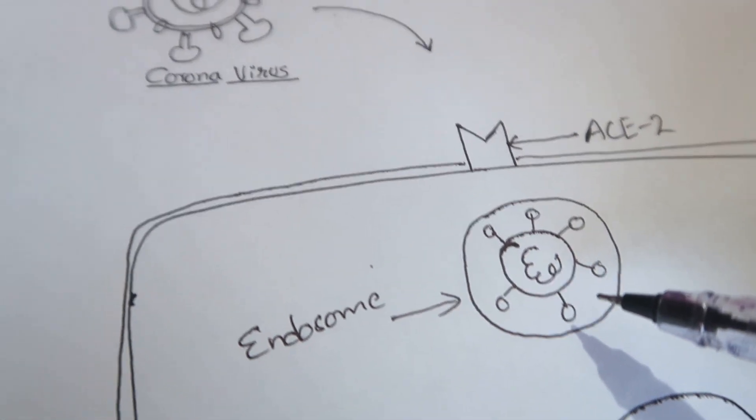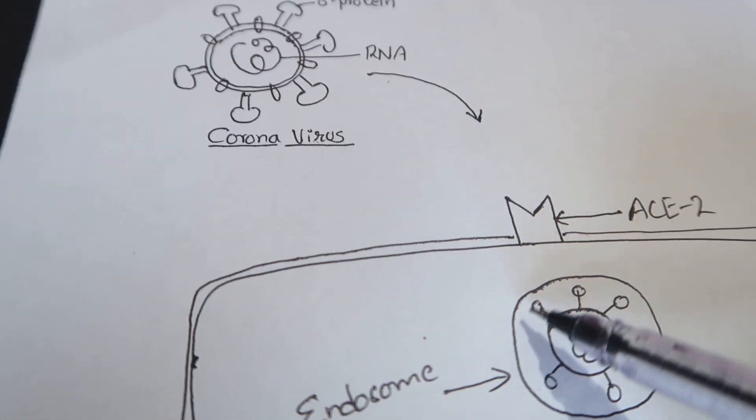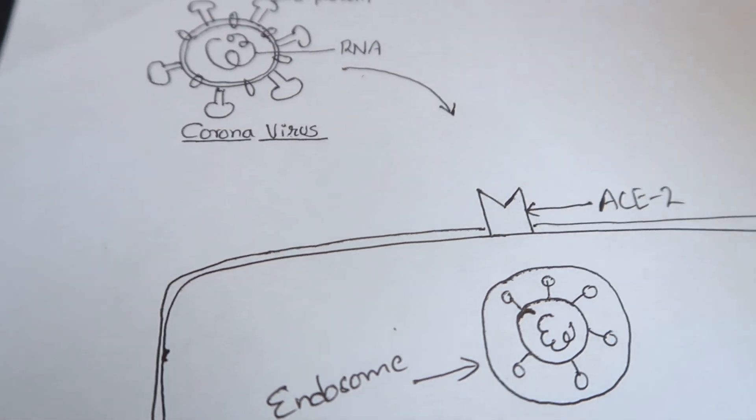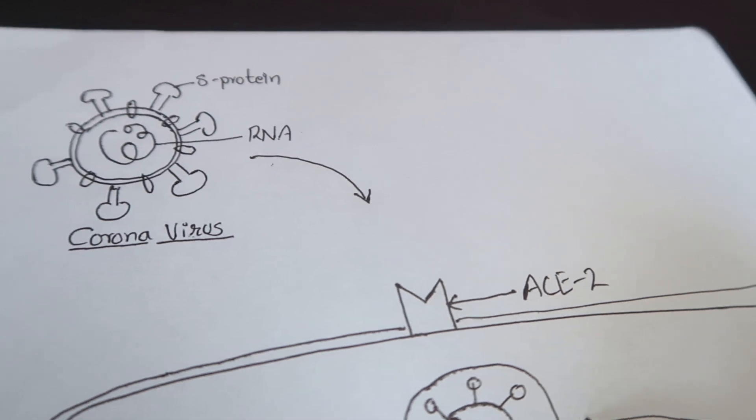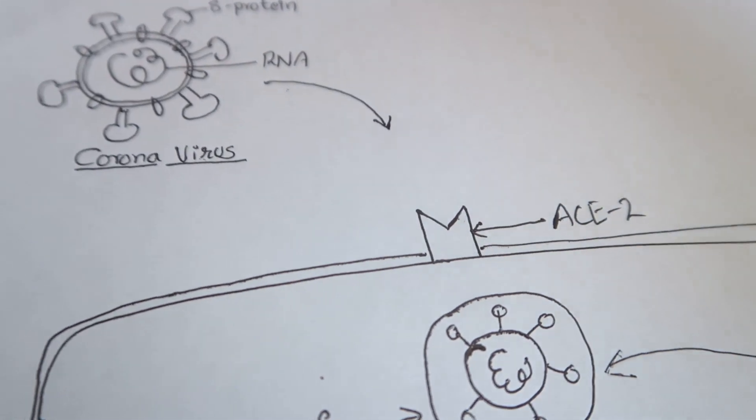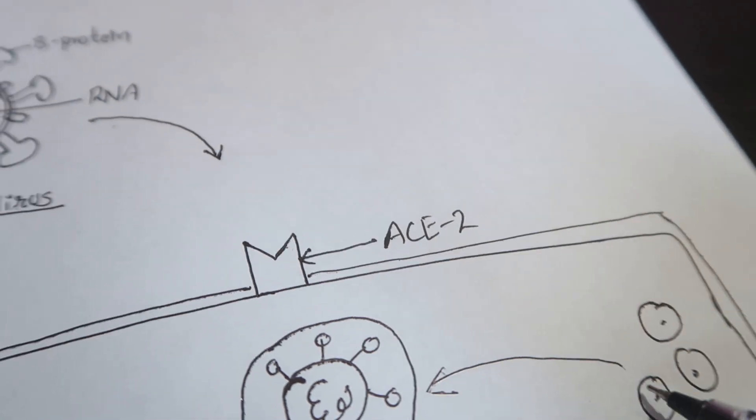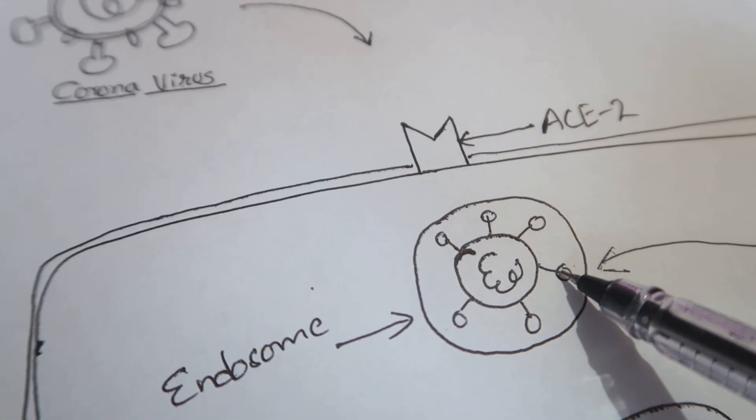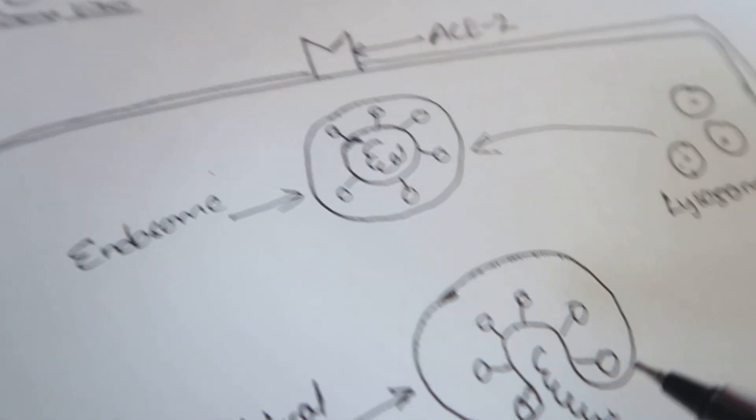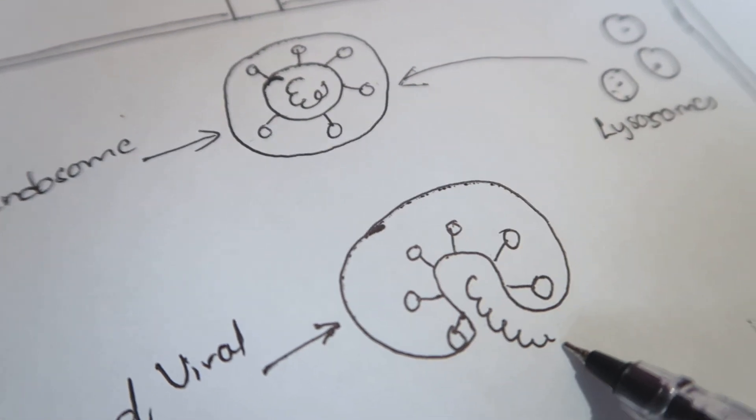After this, some lysosomal cells will come and fuse with the endosome forming an endolysosome. These lysosomal cells have lysosomal enzymes, and these lysosomal enzymes will activate the S protein, and that will lead to the release of viral genome into the cytoplasm.